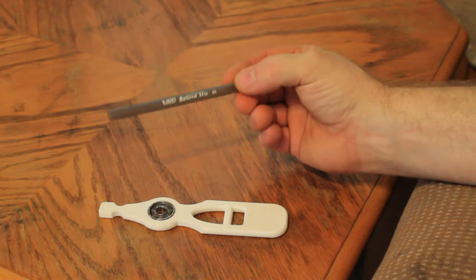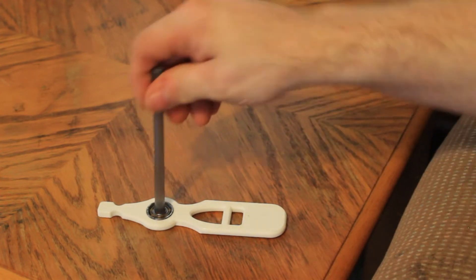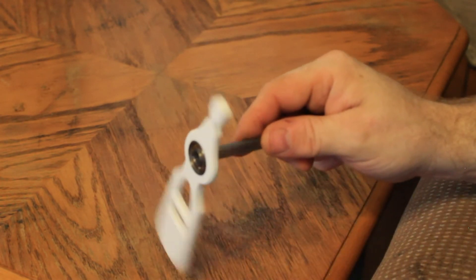And I discovered that a Bic pen, a round Bic pen, fits perfectly into the inside of the bearing. And that's not going anywhere. So when you're done spinning, you can pull it apart.